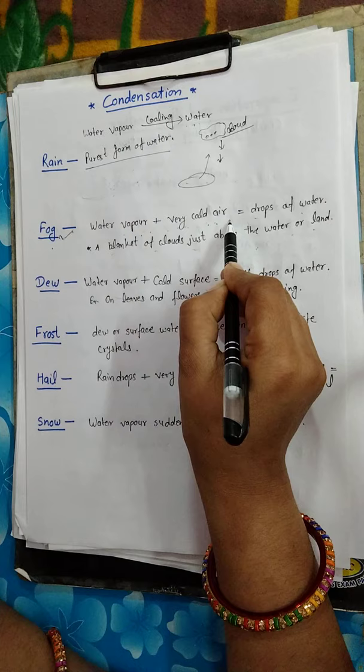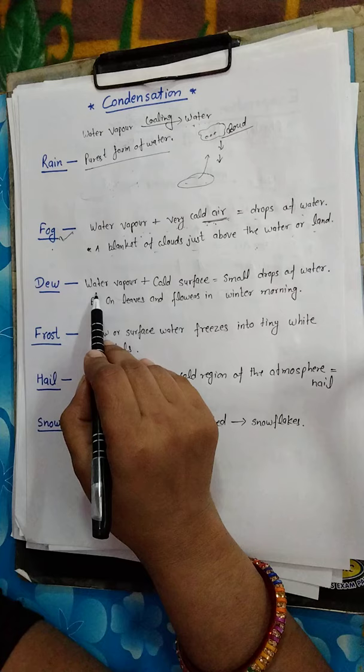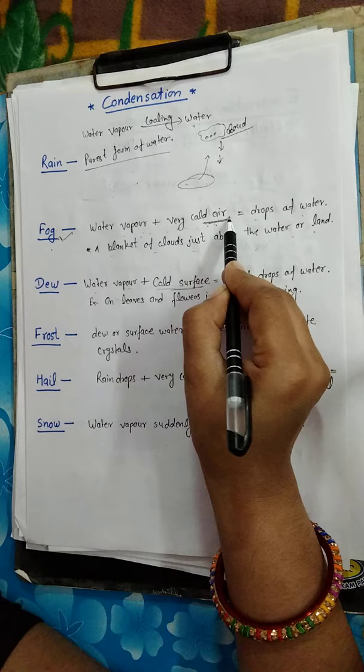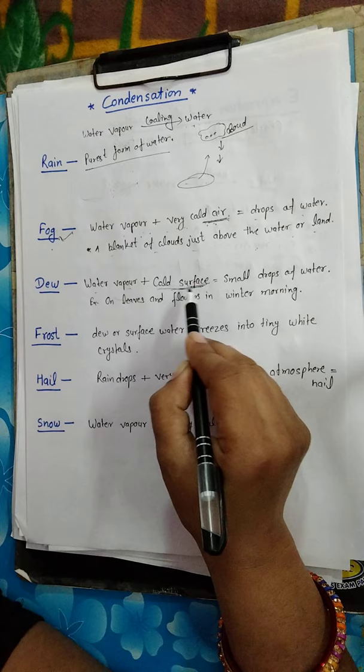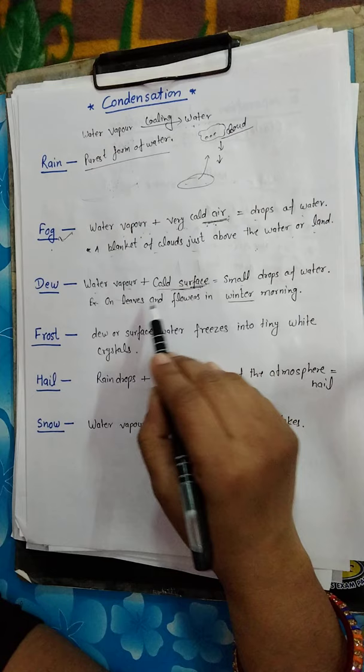Next is dew. Dew is water vapor that attaches to a cold surface. So we have fog for air and dew for surface. When water vapor is attached to a cold surface, small drops of water form. In winter, in the morning on leaves and flowers, you can see little drops of water — that is dew.